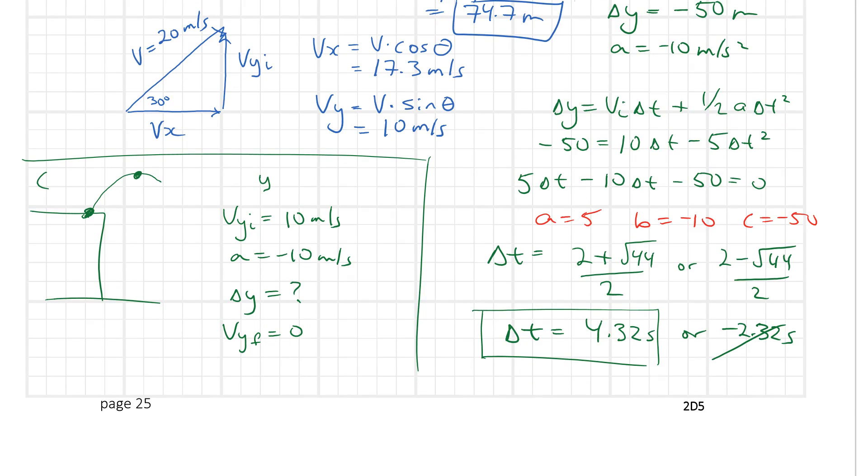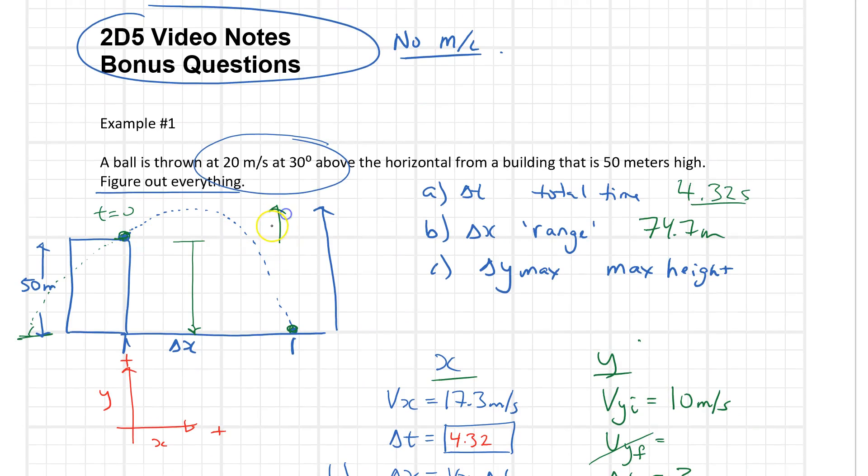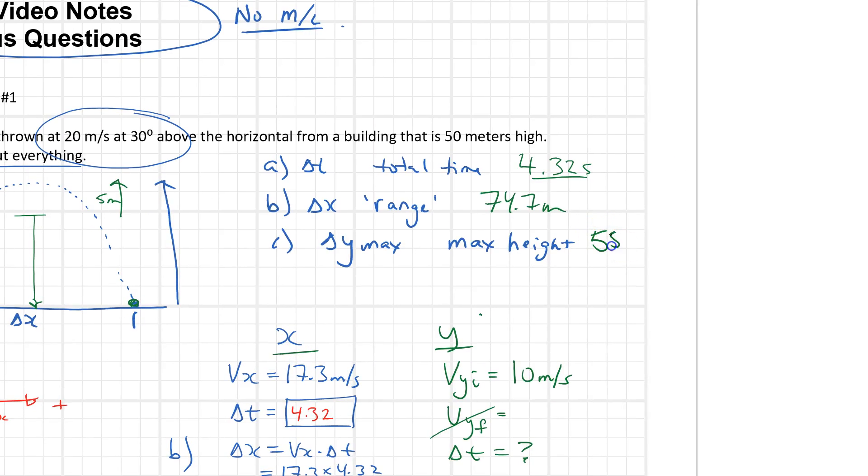So the equation that has all those would be number five: vf squared equals vi squared plus 2a delta y. This would be 10 squared. Oh actually that one's zero. Zero equals 10 squared plus 2 times negative 10, so minus 20 delta y. So I get zero equals 100 minus 20 delta y, so my delta y would be equal to 5 meters. I've got to be a little careful here at the very end. What that tells me is that from here to here, this is 5 meters. So if the question is maximum height, well, if I started on a building that was 50 meters and it changed by 5 upwards, now it would be 55.